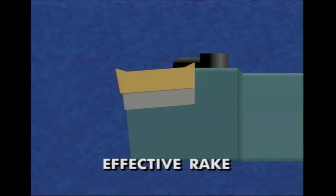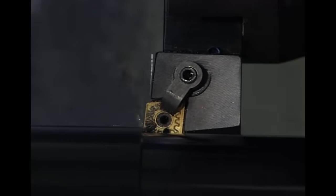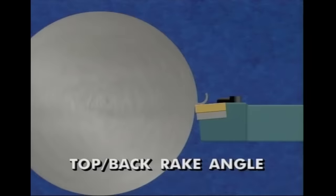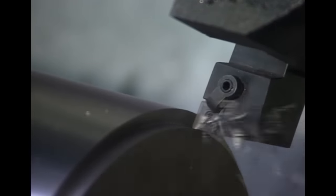The effective rake is a combination of the tool holder's angle of inclination and the rake built into the insert. The largest influence on chip flow in turning is the top or back rake angle — the angle created by the top of the cutting tool and an imaginary line drawn horizontally through the workpiece diameter. A positive top rake tool cuts freely, with reduced power requirements and reduced temperatures. A negative top rake tool is generally stronger, but generates more force and requires more power. A negative or neutral top rake is preferred for rough turning operations, particularly for cast iron.